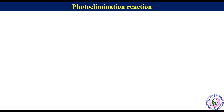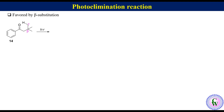Now we will discuss the second process, photo-elimination, which has been known for a long time and is often referred to as the Norrish Type 2 reaction. It is favored by beta substitution. For example, compound 14 has hydrogen at the gamma carbon and the beta carbon is fully substituted. So it will give the photo-elimination product as the major product. Upon irradiation, abstraction of the gamma hydrogen by oxygen gives a 1,4-diradical which after cleavage of the beta-gamma bond gives an enol and isobutene.